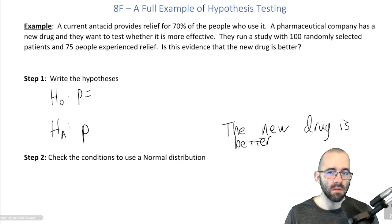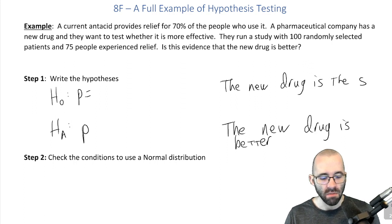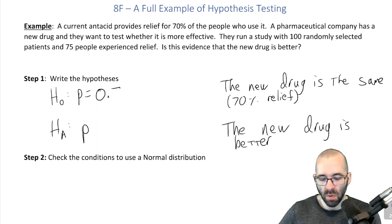So the null is the other outcome, right? That the new drug is the same as the old drug, and specifically the same would be 70% relief. So what are our hypotheses going to look like? Well, that the new drug is 70% just like the old one. Better than 70% would be more relief.